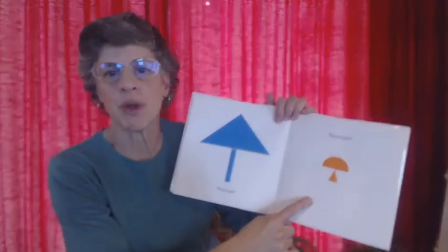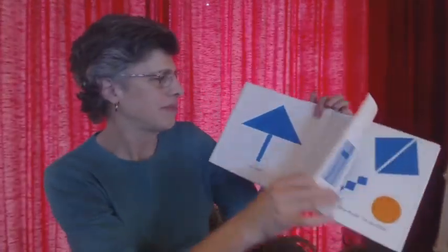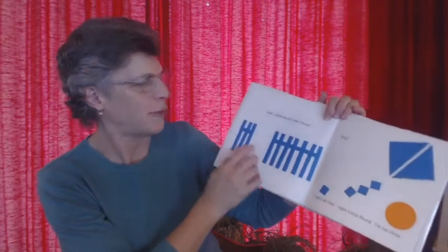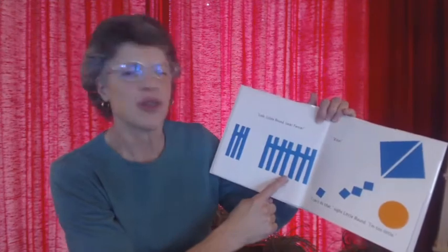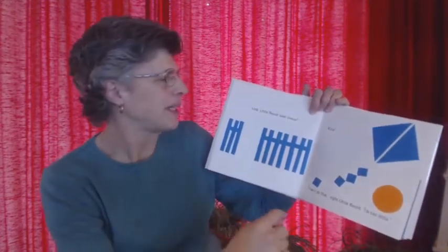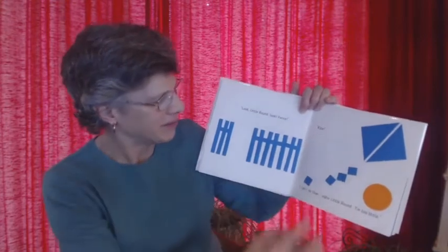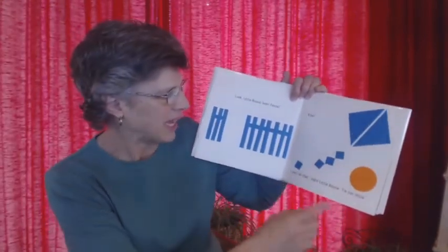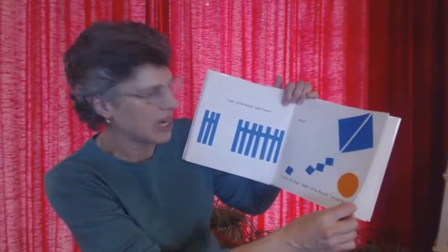Mushroom. Look, Little Round. Look. Fence. Square turned into a fence, cut himself up. Kite. Now it's a kite. I can't do that, sighs Little Round. I'm too little.